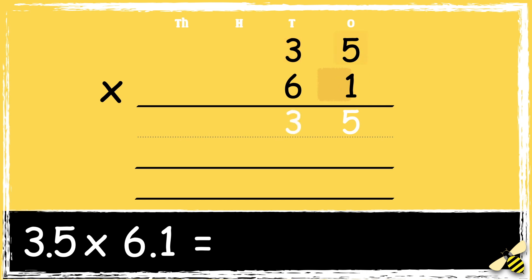Next, we need to multiply 6 tens by 5. As we're multiplying by the number in the tens column, we need to use 0 as a placeholder in the ones column. So 6 times 5 is 30. We can carry the 3 below in the hundreds column.